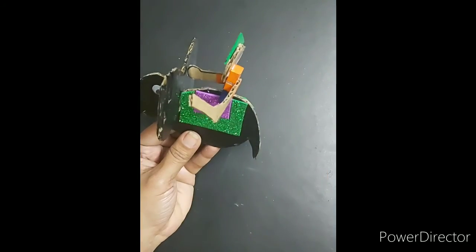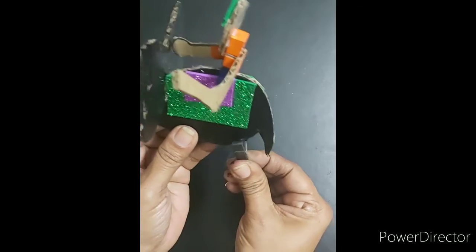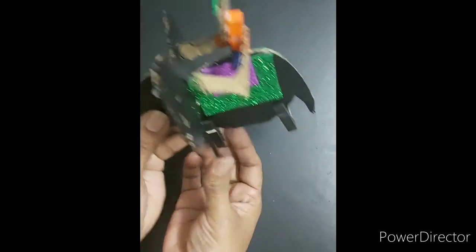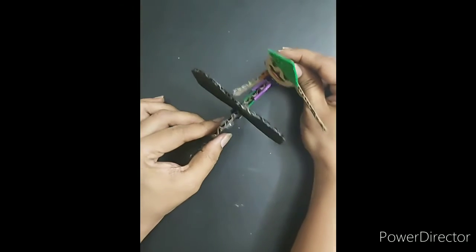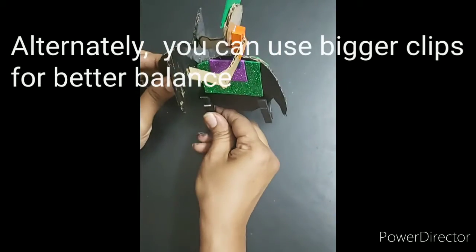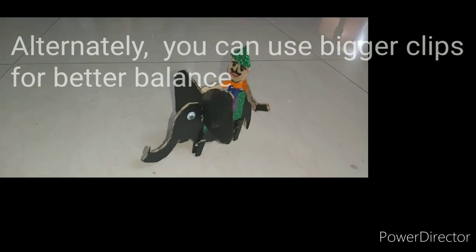And then for the legs. I have used these wooden clips which I had painted black. I'm going to just clip them here so that it can stand. And just adjust the balance and see where it stands. So the 3D elephant is ready.